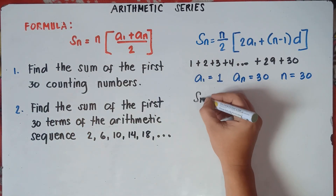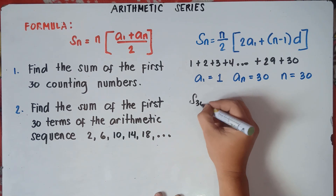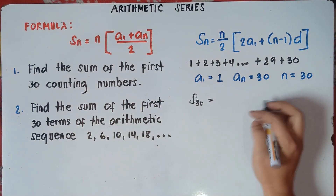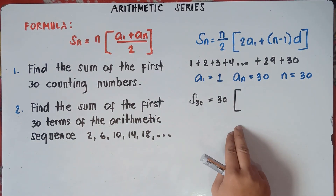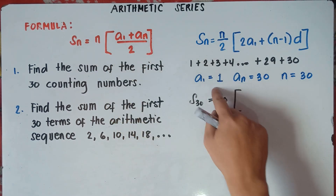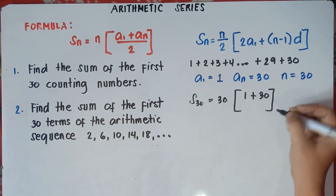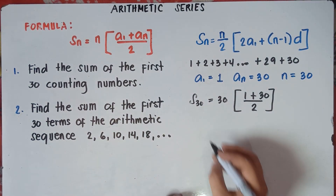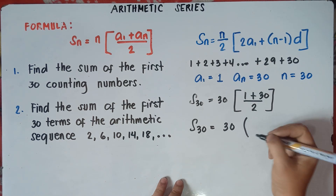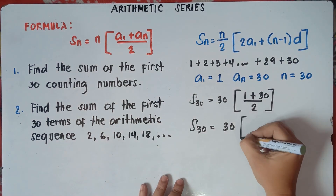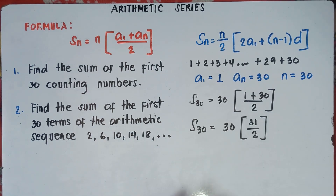Alright, so use this formula. So that would be S sub N, or S sub 30, since we're looking for the sum of 30 terms. S sub 30 equals N — the number of terms — that would be 30, then bracket A sub 1 is 1 plus our last term is 30, divided by 2. So this will be S sub 30 equals 30 times bracket 1 plus 30, that is 31, divide by 2.